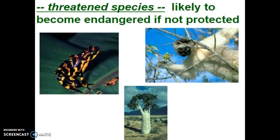Threatened species are species that, if not protected, will most likely become endangered. For example, the poison arrow frog in tropical rainforests is undergoing research for the different toxins in its poison, which is thought to perhaps deal with neuromuscular functions. For people with Parkinson's disease who have uncontrollable shaking, perhaps the poison from the poison arrow frog could be used in a medication to prevent that muscle twitching.